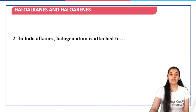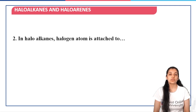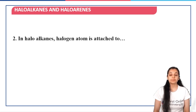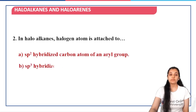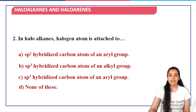The next question is: in haloalkanes, the halogen atom is attached to which type of carbon? We have already seen that in haloalkanes, since we have the alkyl part where the carbon is sp3 hybridized, the halogen atom is going to be attached to the sp3 hybridized carbon of the alkyl group. So option B — sp3 hybridized carbon atom of the alkyl group — is the right answer here.